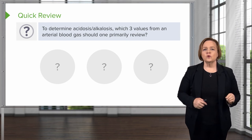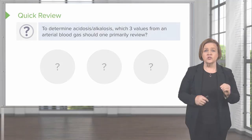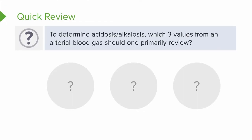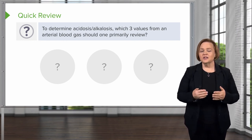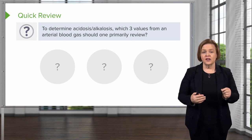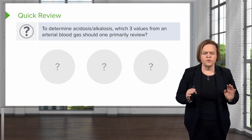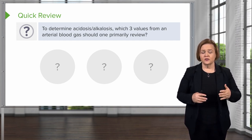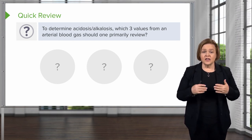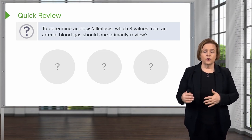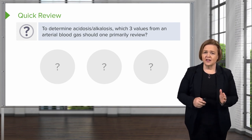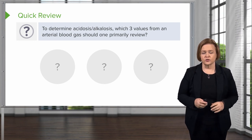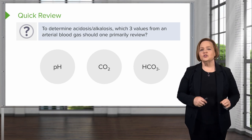Let's do a quick review. In order to determine acidosis or alkalosis, we will primarily look at which three values from an arterial blood gas? Pause the video and see if you can write those three down. As an educational psychologist, I know it's the best way to study as you go — it gives you a better shot at remembering these concepts before moving forward, especially when you have precious little time in nursing school. The answers are: pH, CO2, and bicarb.